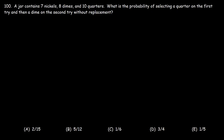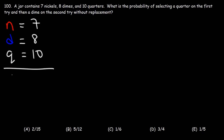Number 100. A jar contains 7 nickels, 8 dimes, and 10 quarters. What is the probability of selecting a quarter on the first try and then a dime on the second try without replacement? Let's list out the information: 7 nickels, 8 dimes, 10 quarters. The total: 7 plus 8 is 15, 15 plus 10 is 25. So we have a total of 25 coins in this jar.